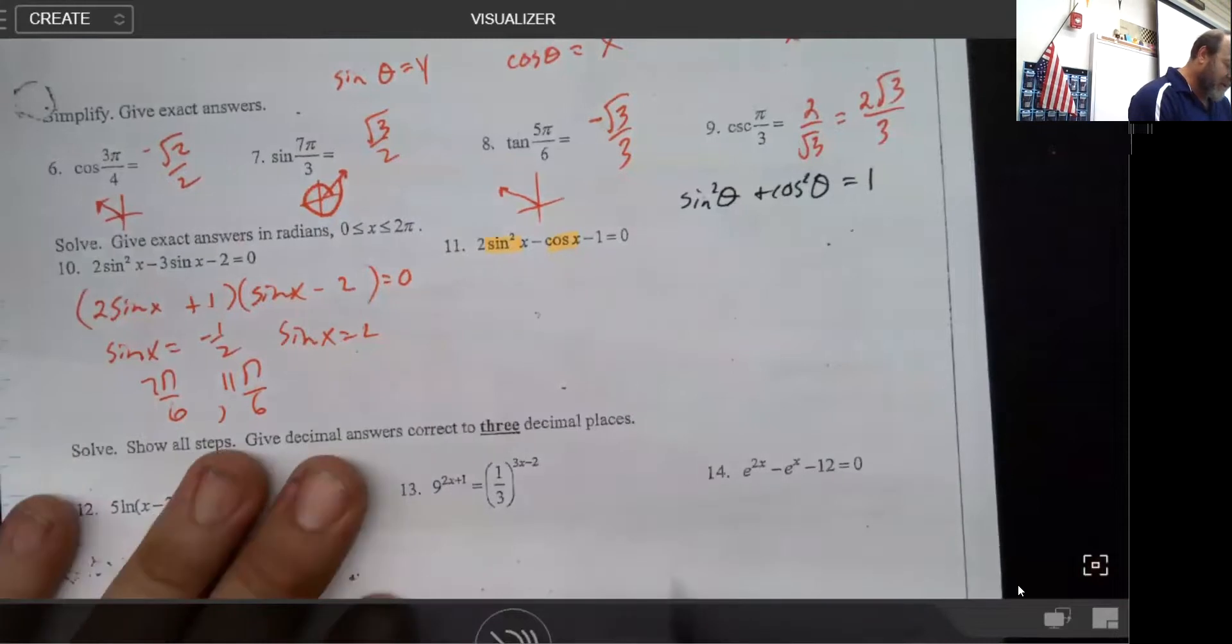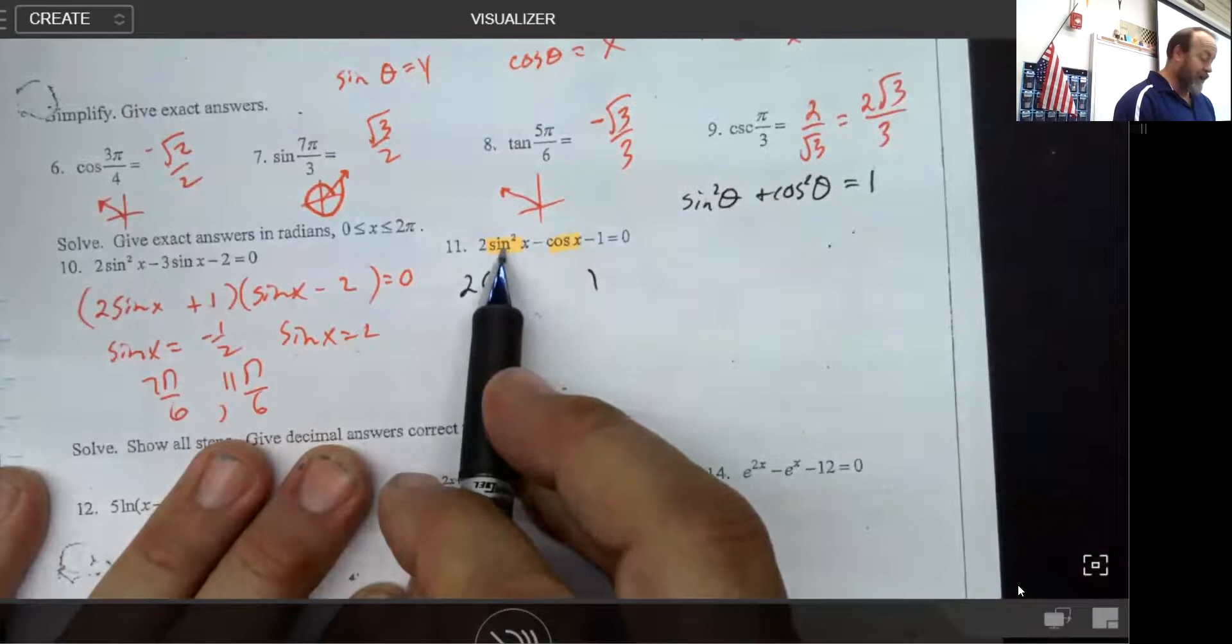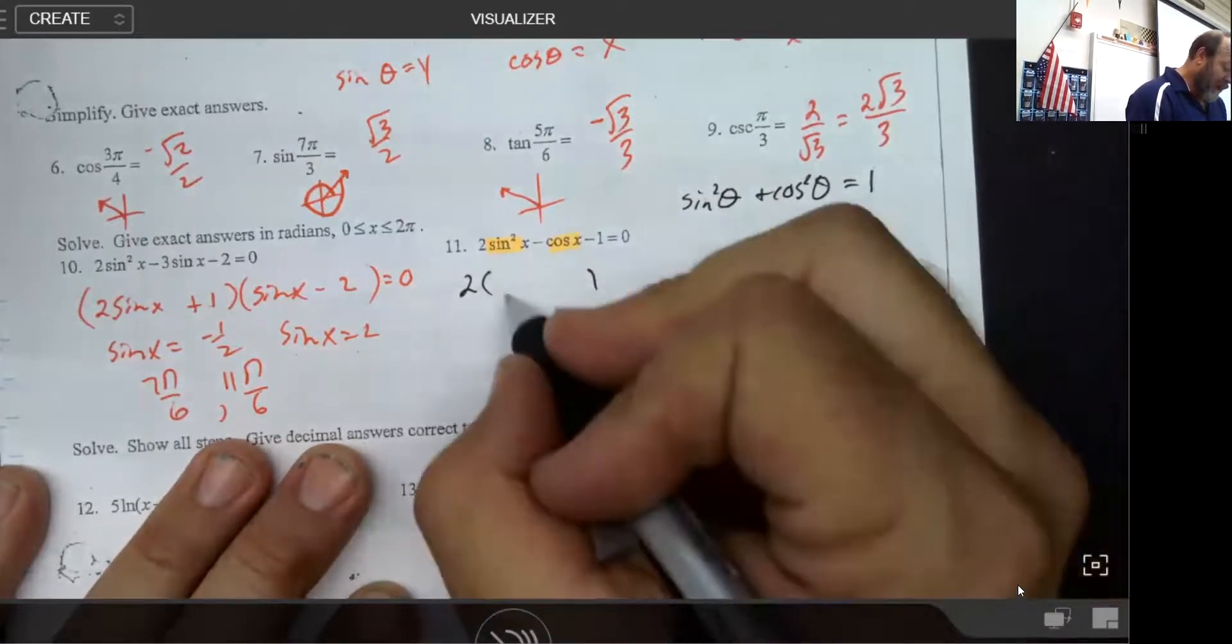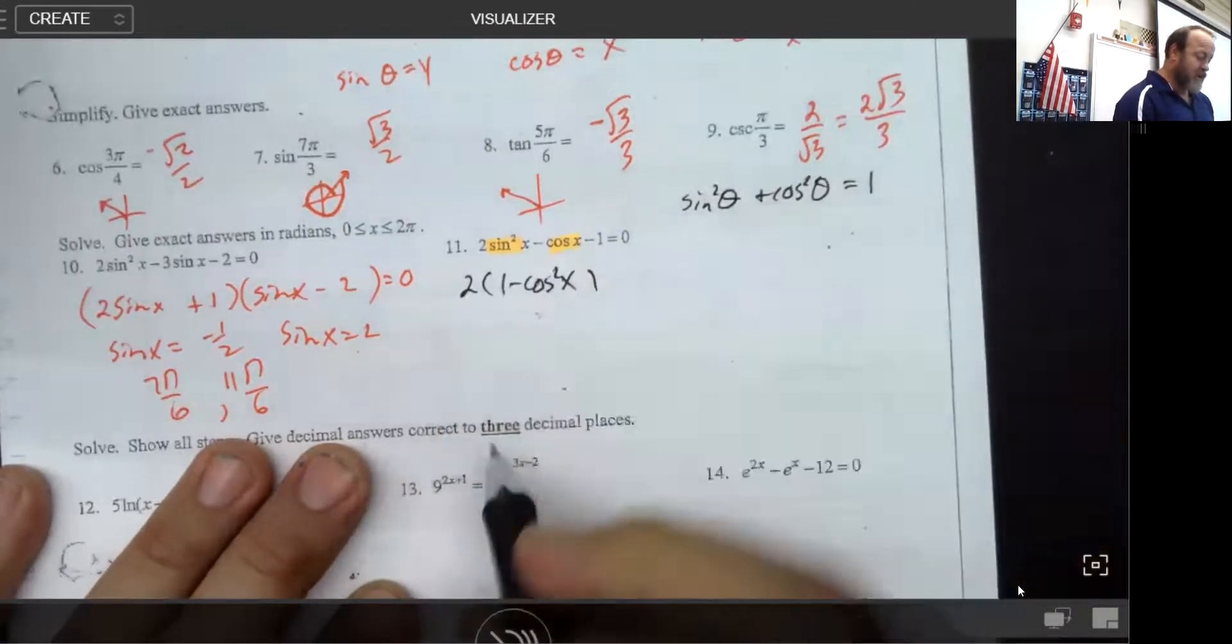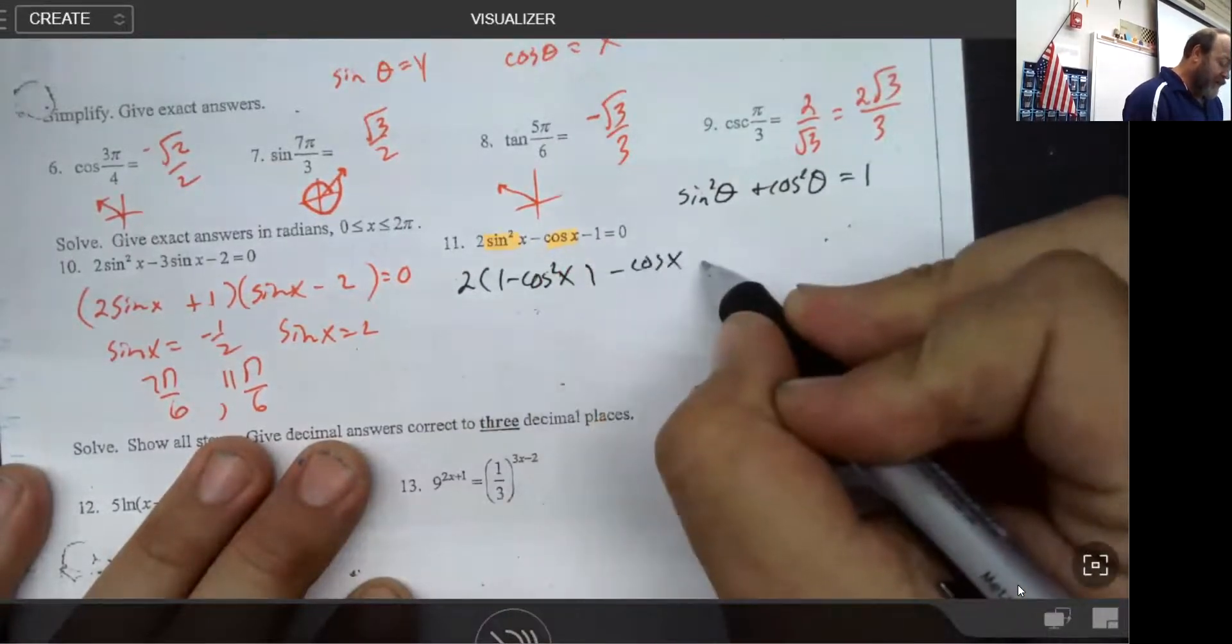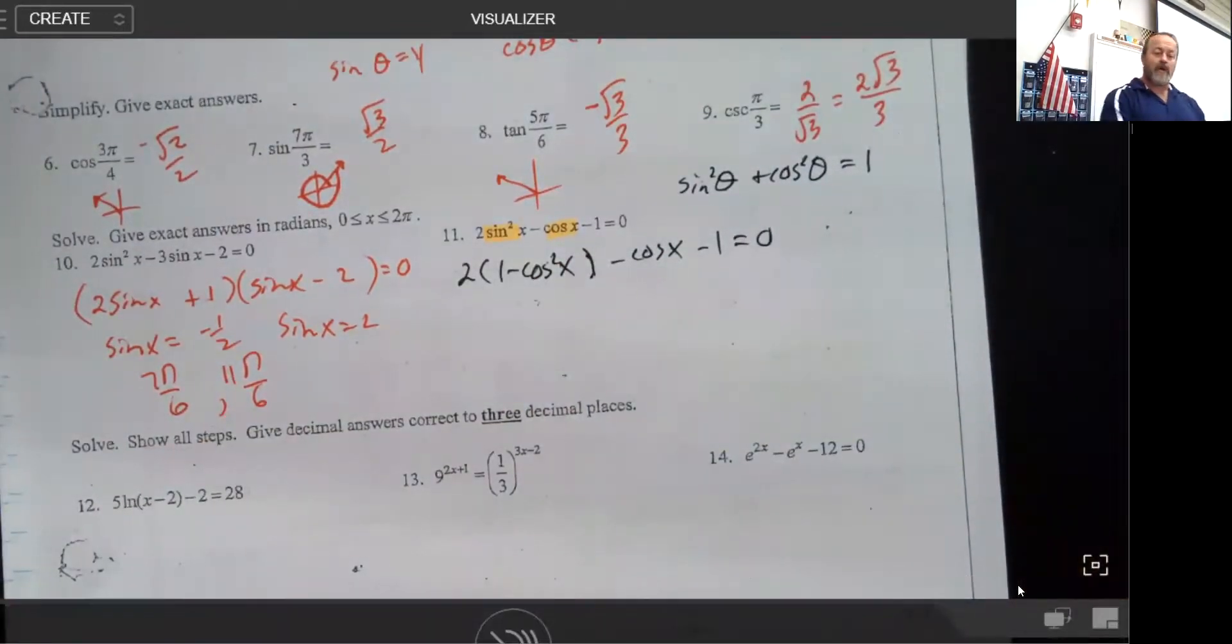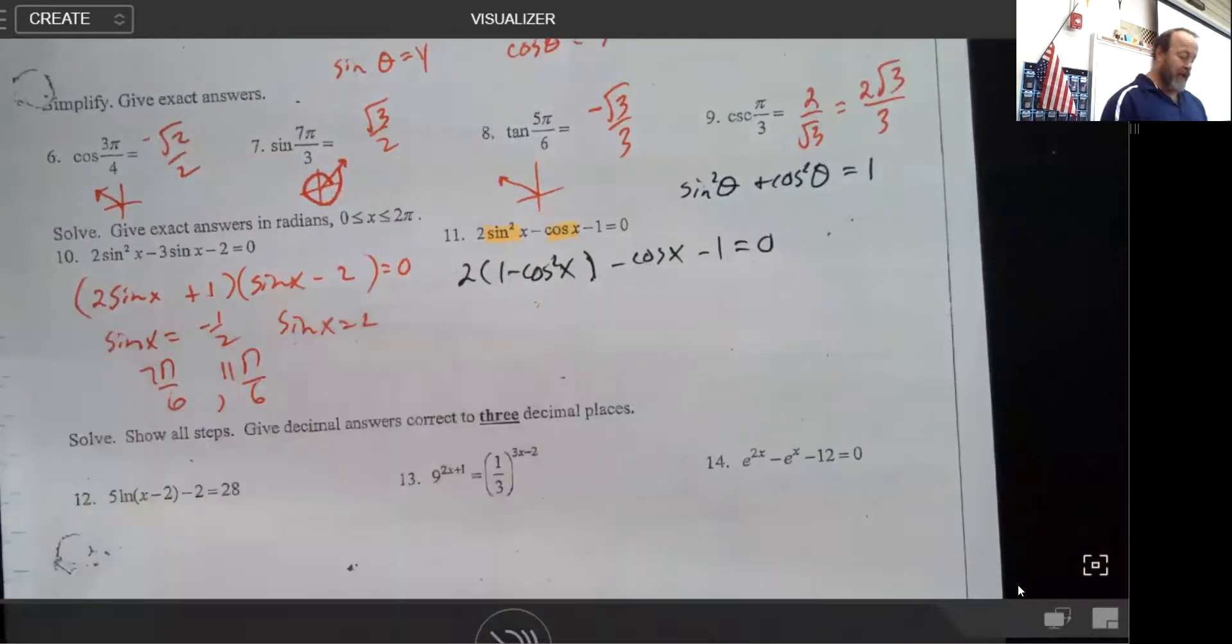So what I'm going to do is in order to make these two things match, I'm going to replace this sine squared right here with one minus cosine squared. Now I just got a little bit better in this problem because now at least we have some simplistic agreement where it's all cosines.